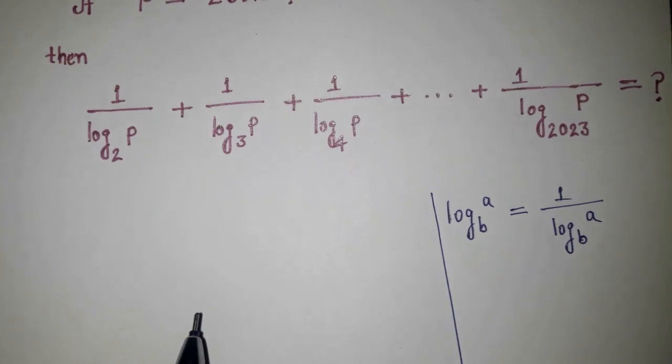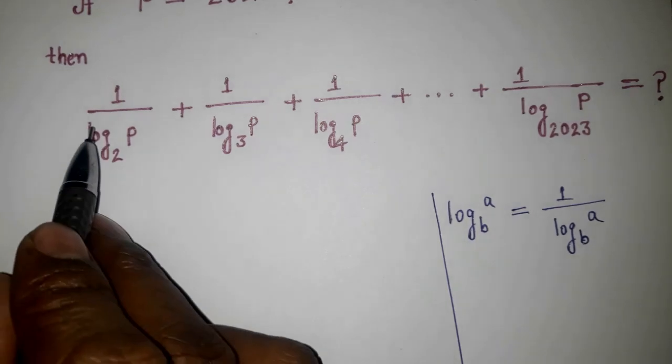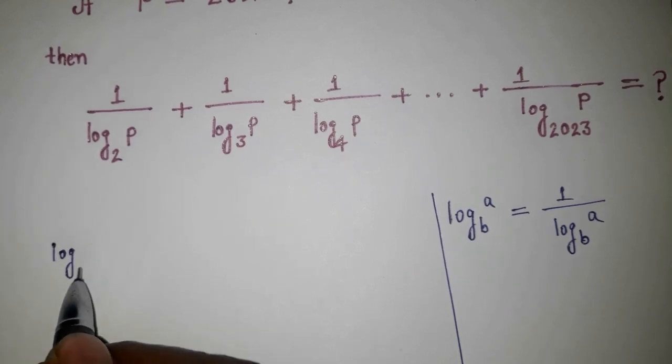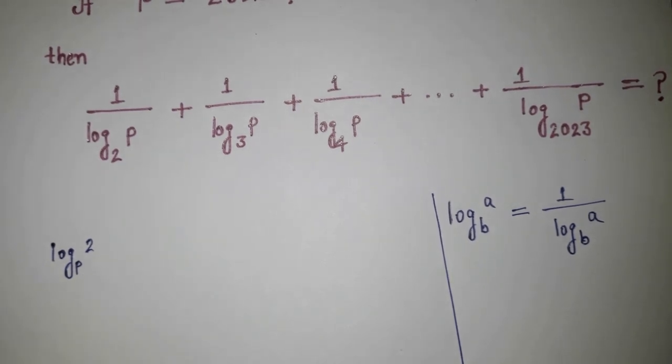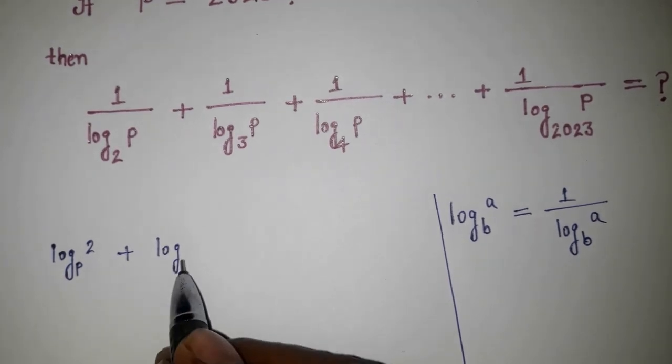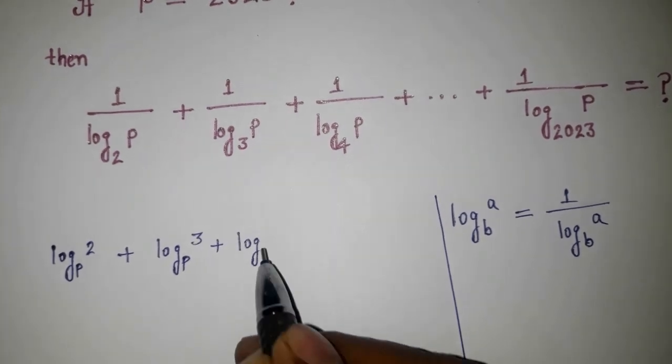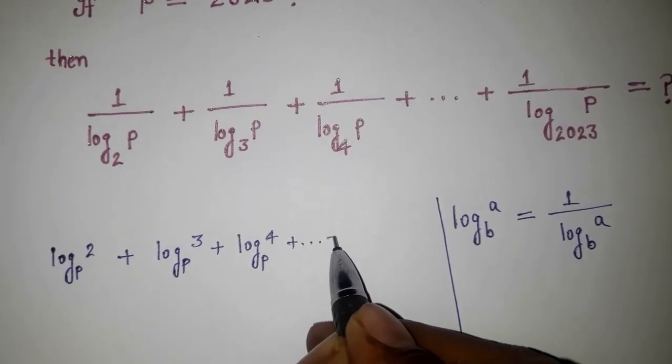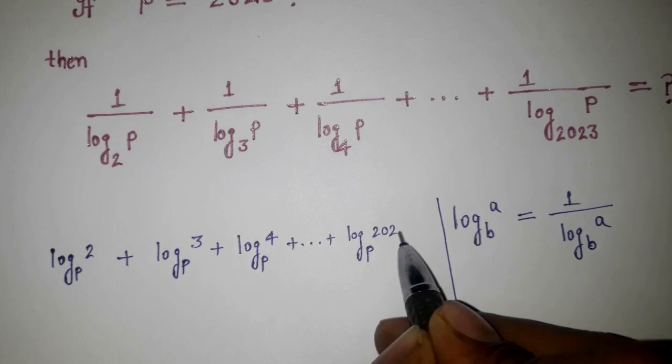So this can be written as, by using this formula, P will come here and 2 will come here. We can write log base P of 2, log base P of 3, similarly log base P of 4, and so on up to log base P of 2023.